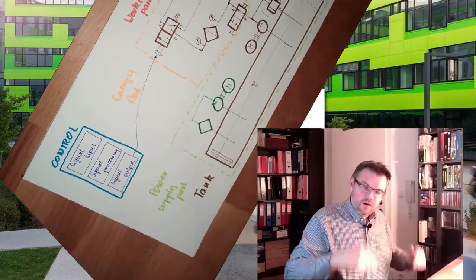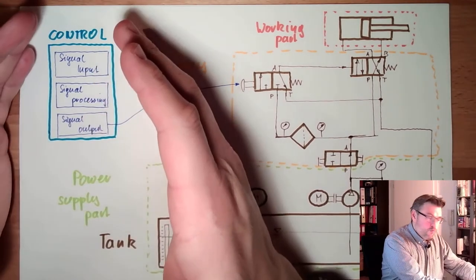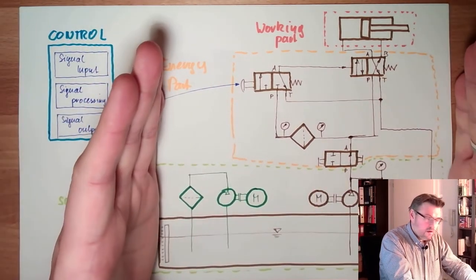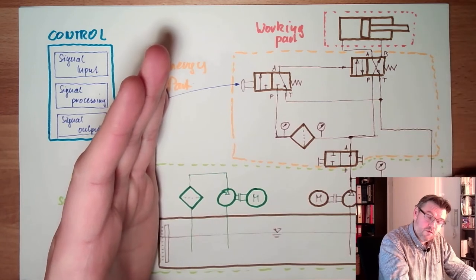This is the picture which we have drawn last time. There's a control part which is controlling the power part, and the power part consists of several different things.